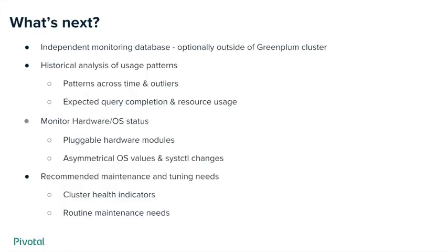We're setting up a GPCC history database to replace the GPPerfMon database. Based on the historical usage and performance of your queries, we can analyze patterns across time periods and identify any outliers. This will help you better understand the expected query completion and resource usage of your queries and workloads, and gain even finer control over your resource allocations.